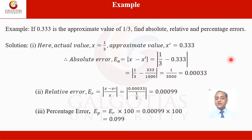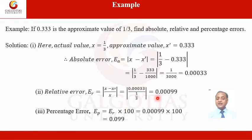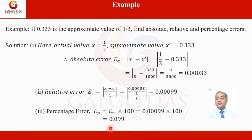The relative error is the absolute error divided by the exact value: 0.000333 divided by 1/3, which gives 0.00099. The percentage error is the relative error multiplied by 100, so 0.00099 × 100 = 0.099. By using these definitions, we can calculate absolute error, relative error, and percentage error.